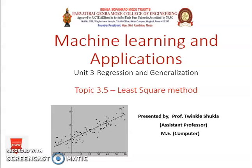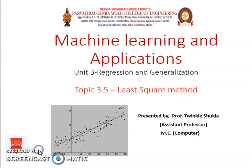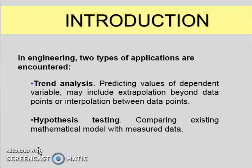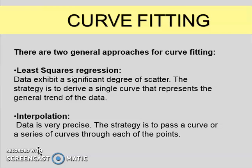Hello everyone. Our subject is Machine Learning and Application, and under Unit 3 we will start today's topic: the Least Squares Method. In the introduction, engineering has two types of applications. The first one is trend analysis, where we have to predict the value of a dependent variable, which may include data points and interpolation between data points. The second application is hypothesis testing, comparing existing mathematical models with measured data.